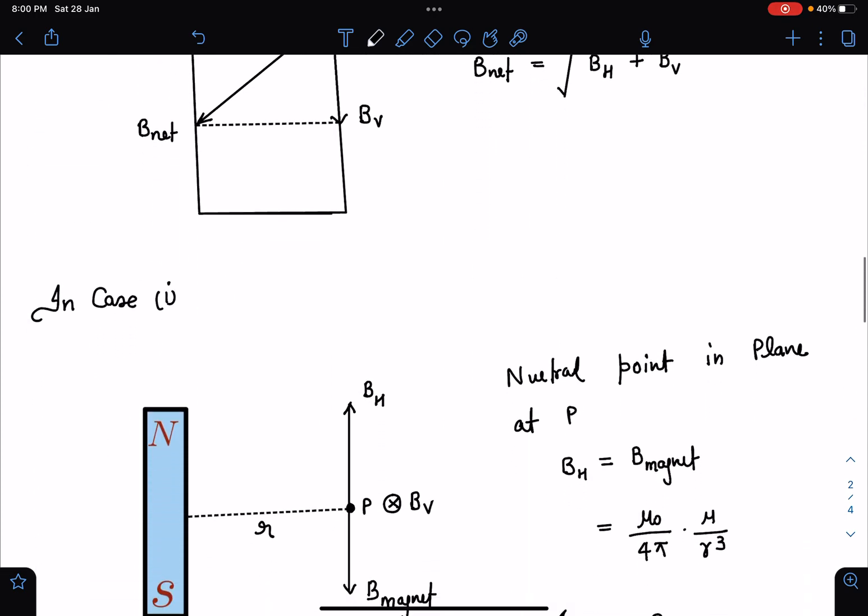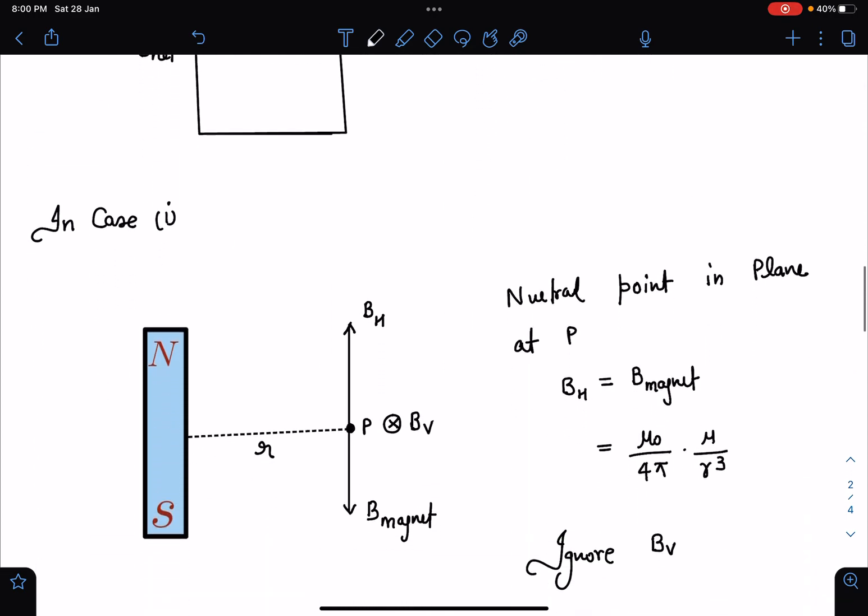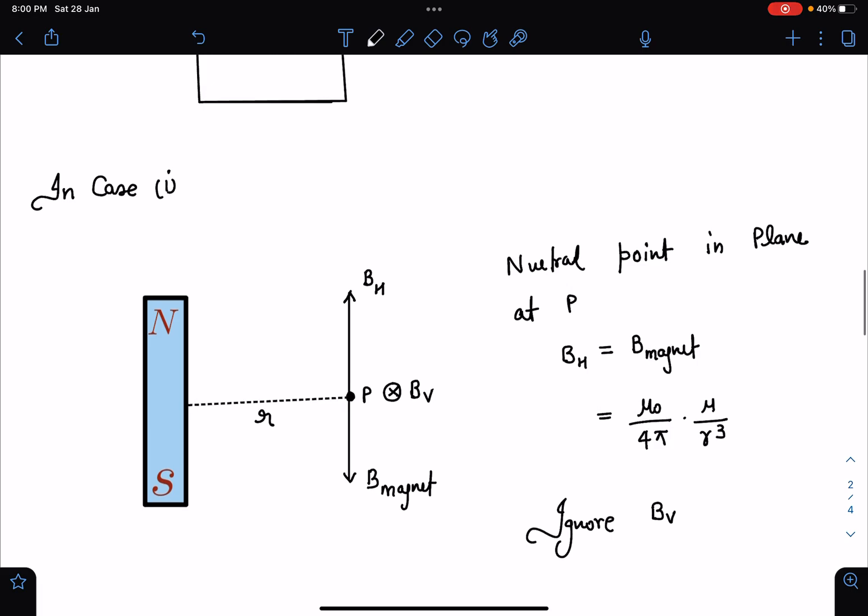Alright, in case 1 they are saying north pole of magnet is facing the north. So it is in this arrangement. And they are saying there is a neutral point obtained at point P. And so if you look at this particular location, because of this magnet field must be in this direction, it is at the bisector. Let's say far away point we are discussing. So B magnet will be in this direction and value of B magnet is mu naught by 4 pi, mu by r cube, where mu is the magnetic moment of it.